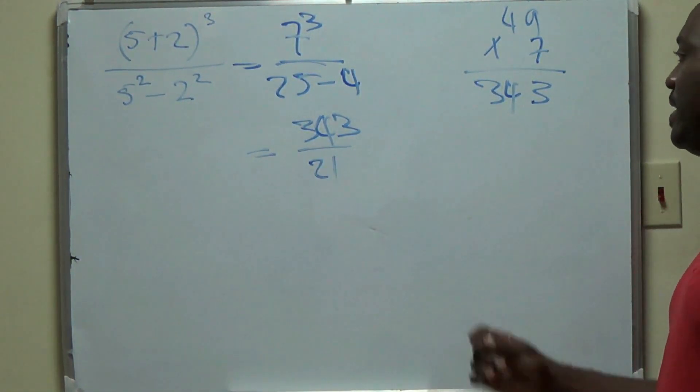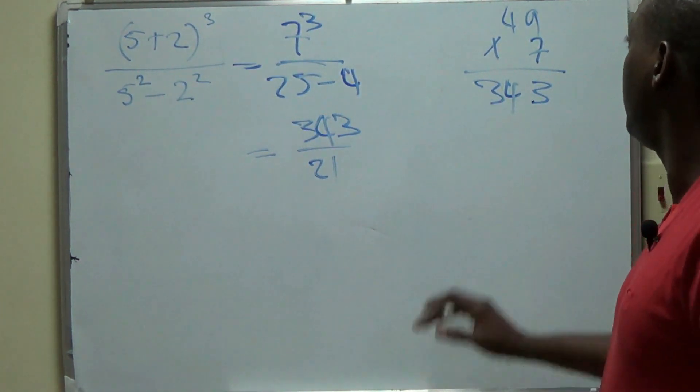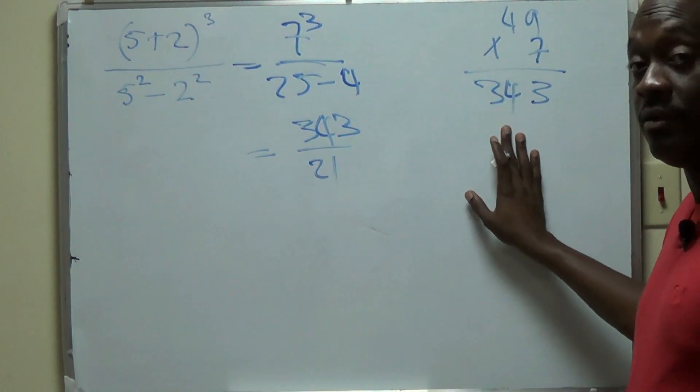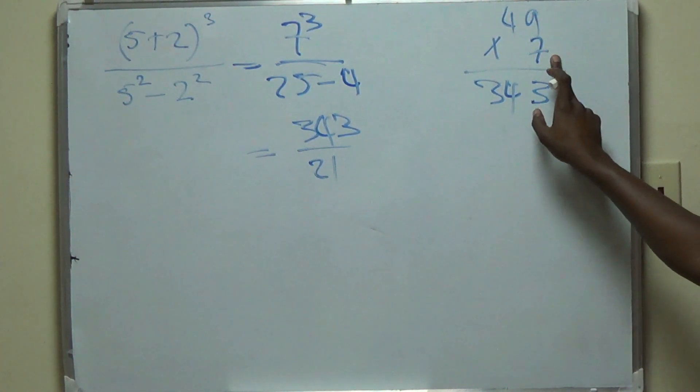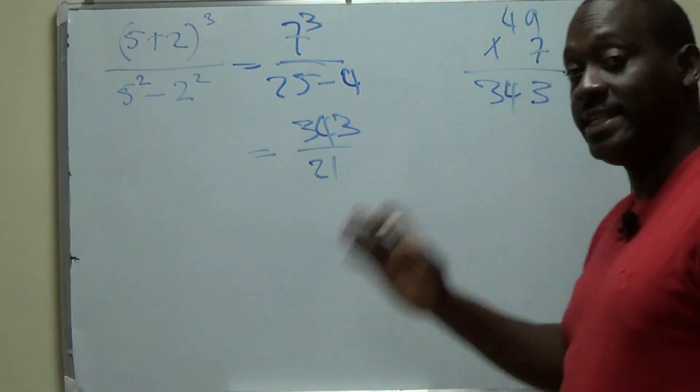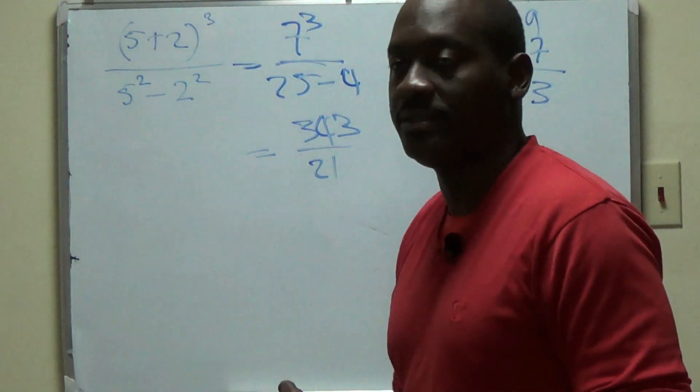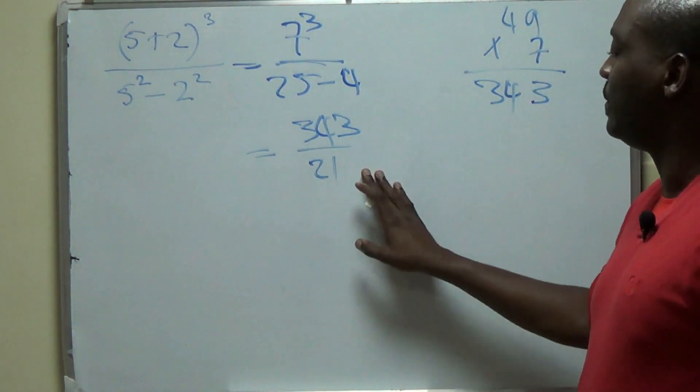Alright? So even in the case where you have to multiply in a multiple choice, you have to be able to multiply this, right? Which would rely upon you knowing that 9 sevens are 63, followed by 4 sevens are 28. So again, tables, tables, tables. So you get the 343 here, over 21.